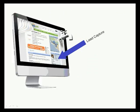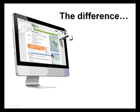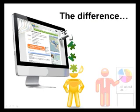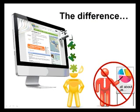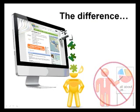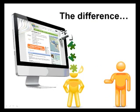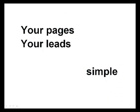Each page has a lead generation form to capture homeowner information. But here's the difference — these pages create leads for you, the contractor, and not for them, the lead generation company. When homeowners search the internet and find your Remodelese pages, the information they enter goes directly to you, and only to you, for free. Your pages, your leads. It's that simple.